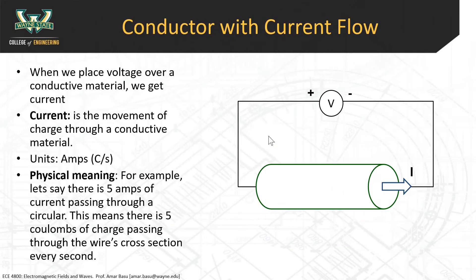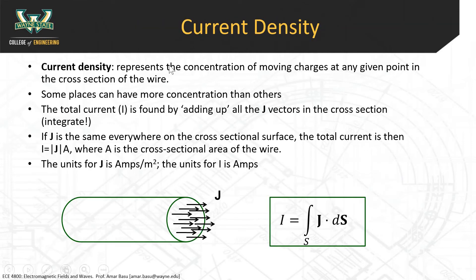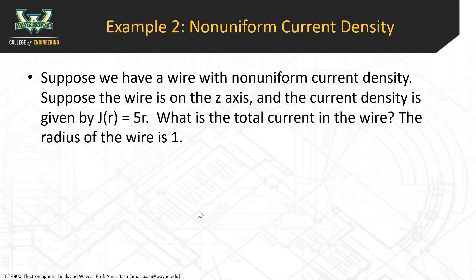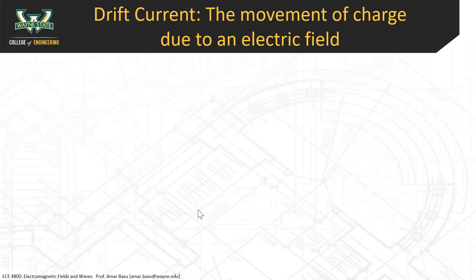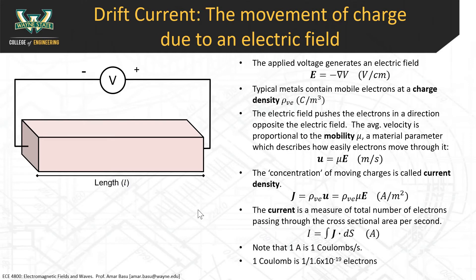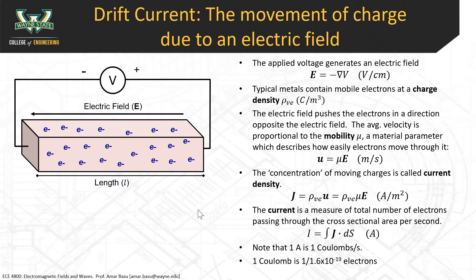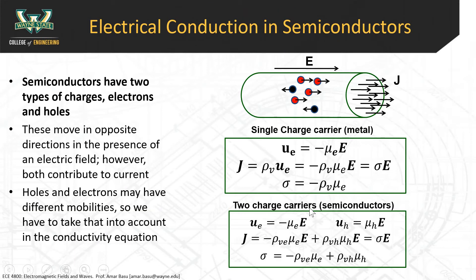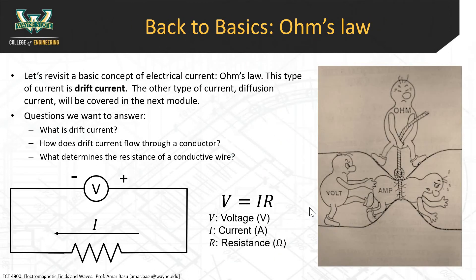We defined current density, whose units are amps per meter squared, and said that the total current is the surface integral of the current density over a cross-sectional area. We discussed drift currents, which arise when you place a voltage over a material, resulting in an electric field that pushes charges through. The material has a property called mobility μ reflecting how easily charges move, and a charge density giving the number of charges per unit volume. We also touched on semiconductors, which have two types of carriers: electrons and holes.